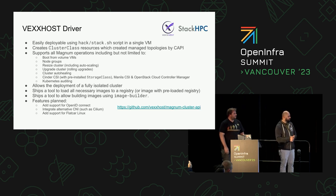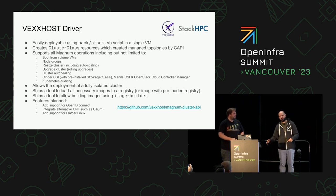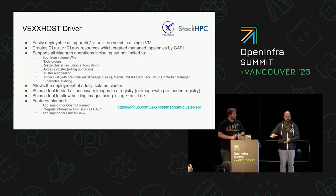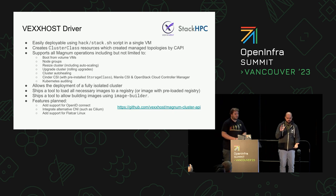Features planned for the future include support for OpenID Connect authentication, integration of alternative CNIs — which requires working with the upstream cluster API community to support things beyond Calico — and Flatcar Linux support, which already exists in the cluster API and mainly needs testing and validation in our driver. That's the gist of our driver. Now I'll let Matt talk about the differences.